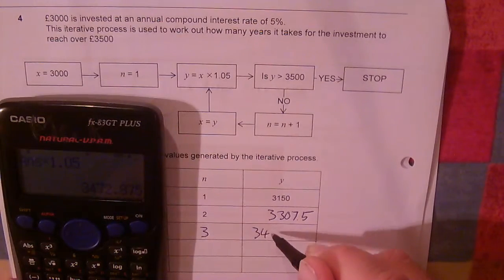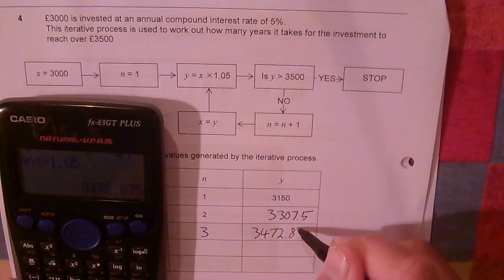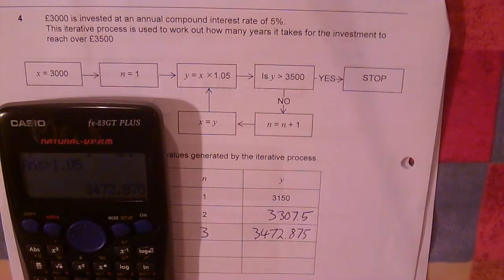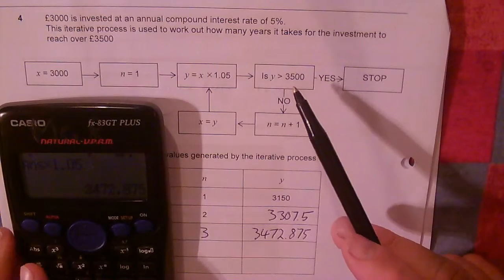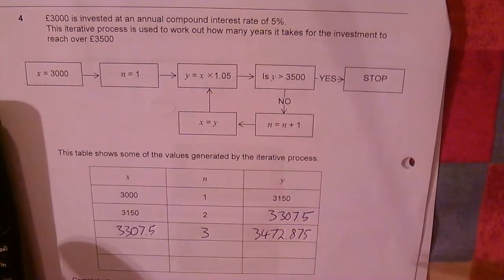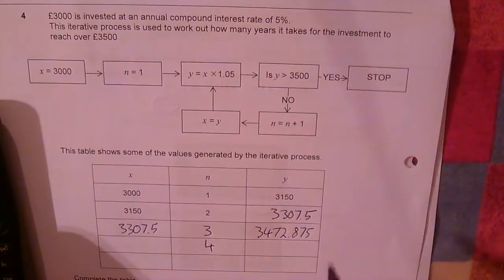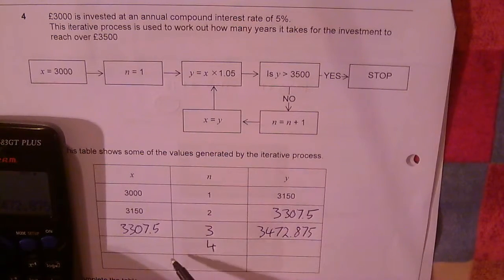£3,472.875. Don't round at this point. Is it over £3,500? No, it's not. So I'm on to my fourth iteration. My output becomes my input.